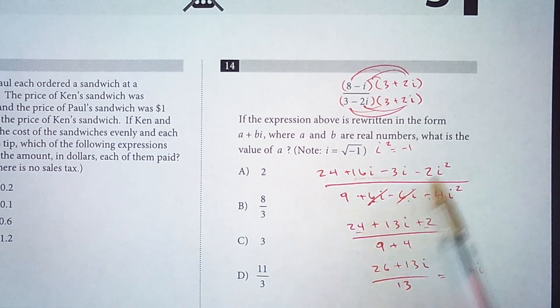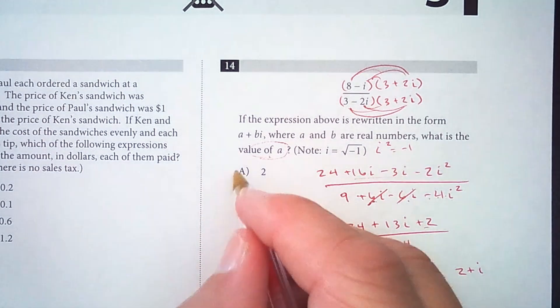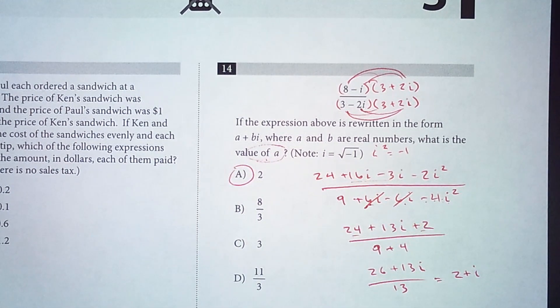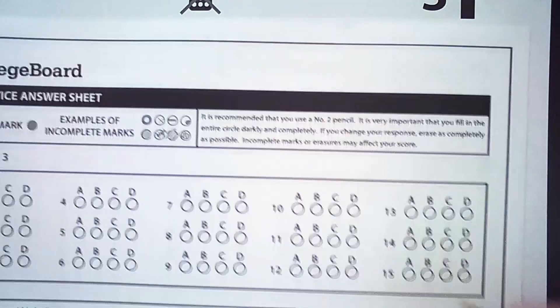So the question is what is the value of a? a is right here, a is 2. So for number 14, we are choosing option A.